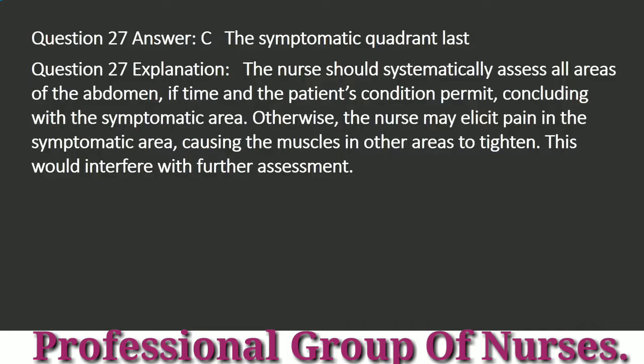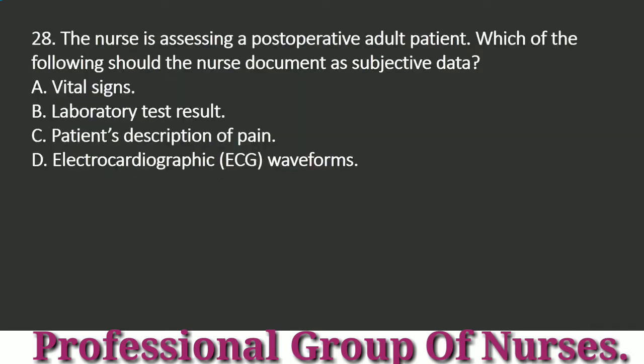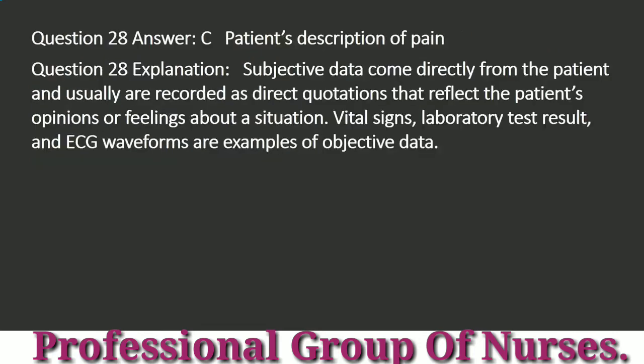Question 28: The nurse is assessing a post-operative adult patient. Which of the following should the nurse document as subjective data? a. Vital signs. b. Laboratory test result. c. Patient's description of pain. d. Electrocardiographic (ECG) waveforms. Answer: c. Patient's description of pain. Explanation: Subjective data come directly from the patient and are usually recorded as direct quotations that reflect the patient's opinions or feelings about a situation. Vital signs, laboratory test results, and ECG waveforms are examples of objective data.